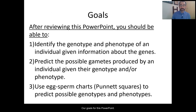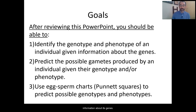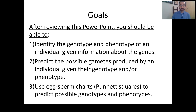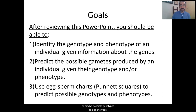Our goals for this PowerPoint. By the end of this, you should be able to identify the genotype and phenotype of an individual given information about their genes. You should be able to predict the possible gametes produced by an individual given their genotype and/or phenotype. And you should be able to use egg sperm charts, also known as Punnett squares, to predict possible genotypes and phenotypes.